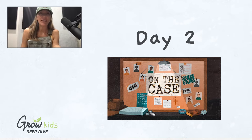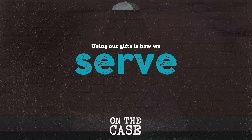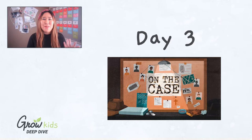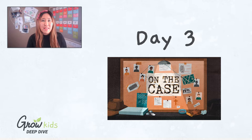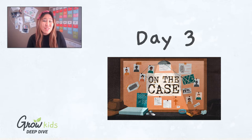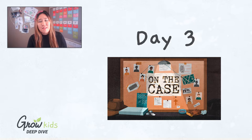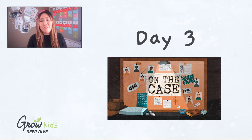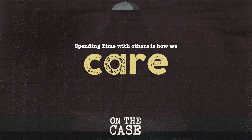On day two, we'll look at the parable of the bags of gold — or talents — in Matthew 25, and how everyone has the abilities and resources to do something for God. Day two's big idea is: using our gifts is how we serve. Day three covers the parable of the Good Samaritan from Luke chapter 10, where the Samaritan took time to care for an injured stranger, helping kids think about how they can pause and pay attention to their friends and family.